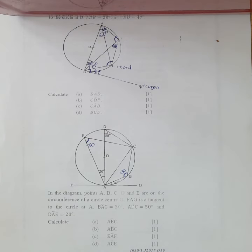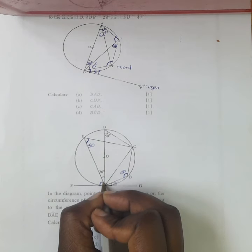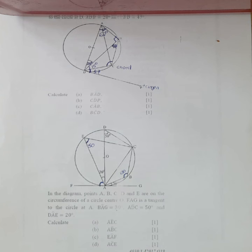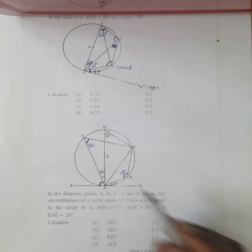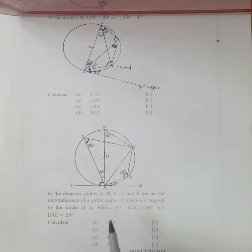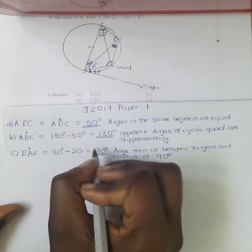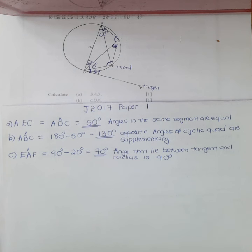Next, we calculate angle EAF. We apply the theorem that the angle between a tangent and a radius is 90 degrees. OA is the radius and FAG is the tangent, so the overall angle is 90 degrees. EAF equals 90 minus 20, which equals 70 degrees. The theorem supporting this is: angle between a tangent and a radius is 90 degrees.